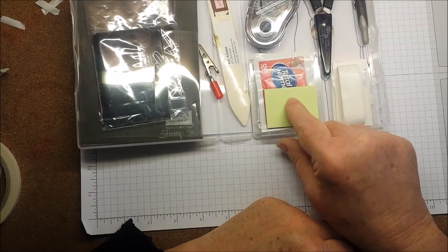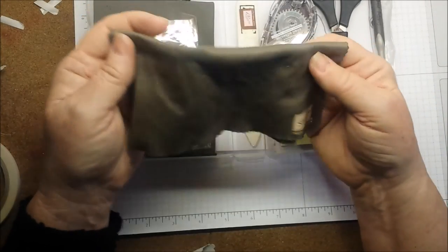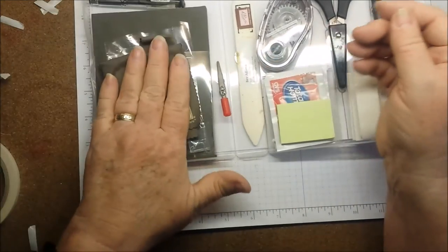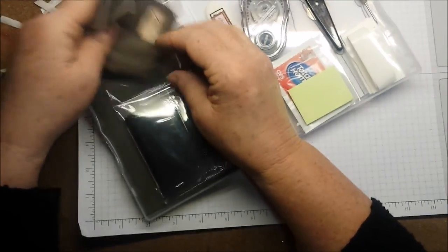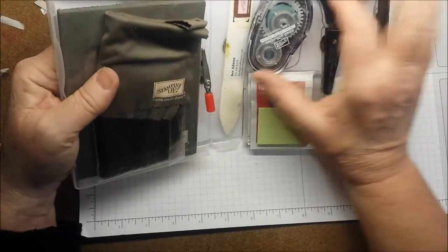Another tool that I'd like you to add is a microfiber cleaning cloth. Or you can cut this down to be smaller. I clean my block and my stamps just about every time I put them in. And now you're ready for just about any Stampin' event. You have your tools ready to go.